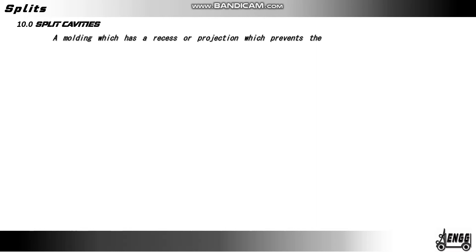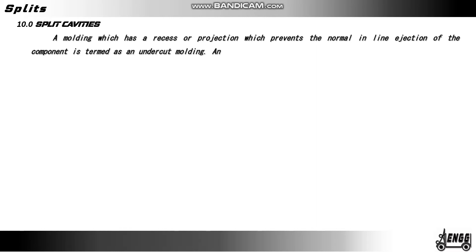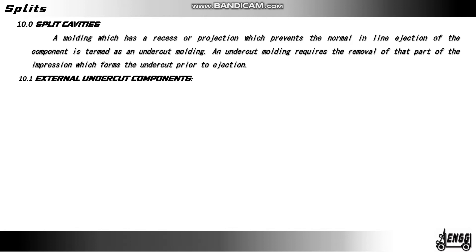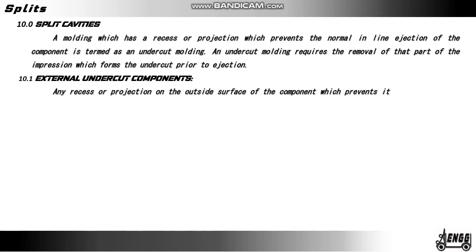Split cavities. A molding which has a recess or projection which prevents the normal inline ejection of the component is termed as an undercut molding. An undercut molding requires the removal of that part of the impression which forms the undercut prior to ejection. Any recess or projections on the outside surface of the component which prevents its removal from the cavity is termed as an external undercut.